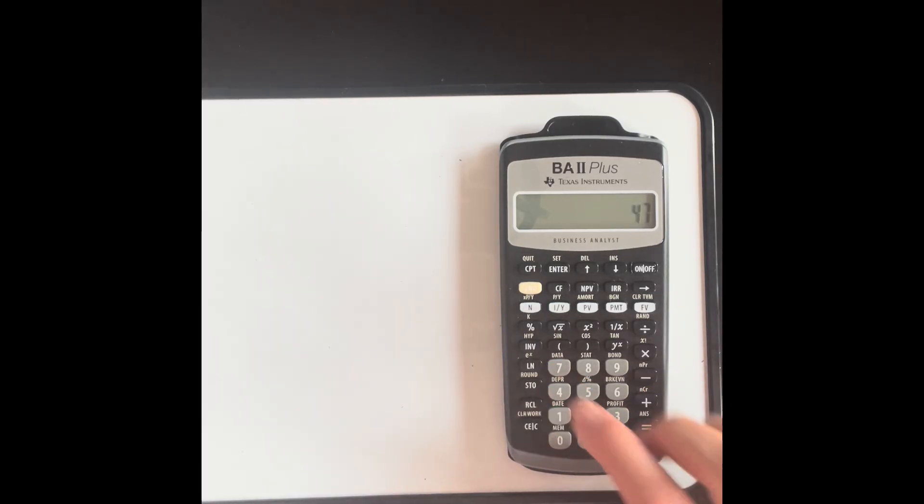So if I went 47, and I stored that in location one, now I have a new number. And the way that I would use that, let's just clear this, let's say I had 23, and I wanted to multiply by the number in my memory, I just go recall one, and then equals.